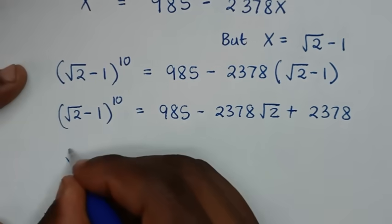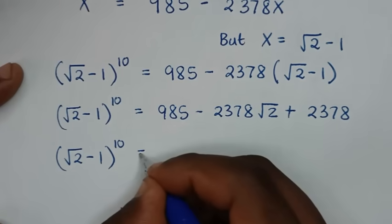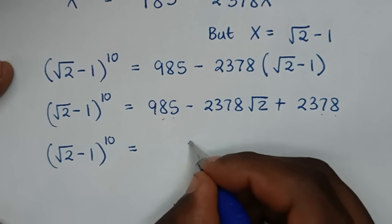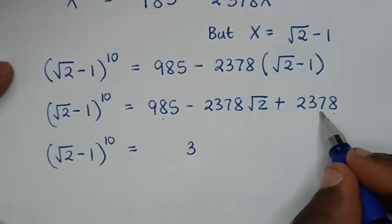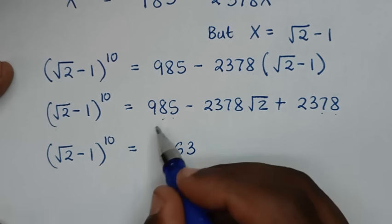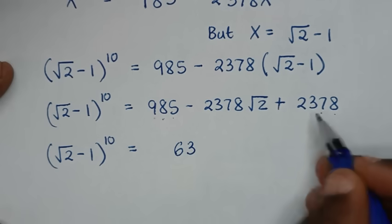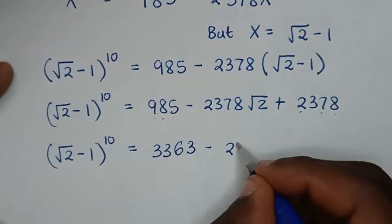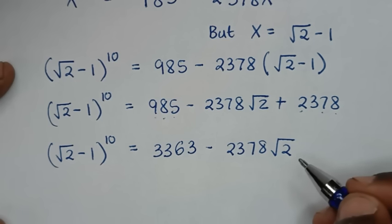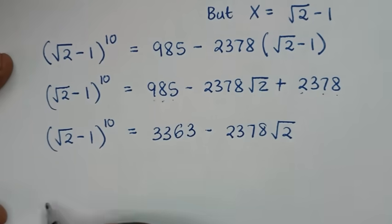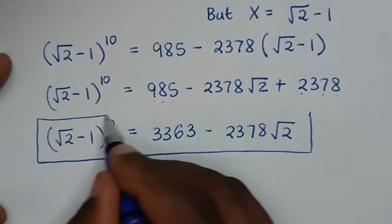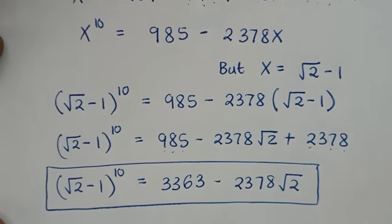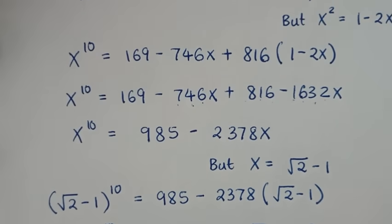Adding the constant terms: 985 plus 2378 equals 3363. So the final answer is: bracket square root of 2 minus 1 bracket to the power of 10 equals 3363 minus 2378 square root of 2. This is the simplified form of square root of 2 minus 1 bracket power of 10. Thank you, don't forget to subscribe to my channel and see you in the next video. Bye bye.